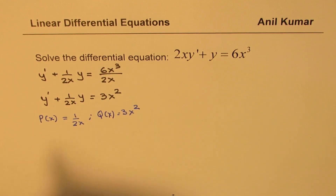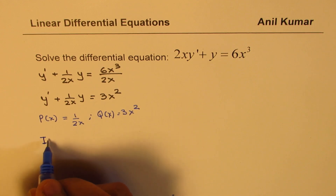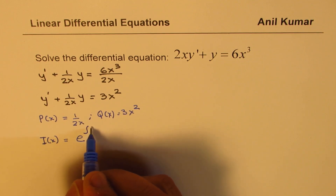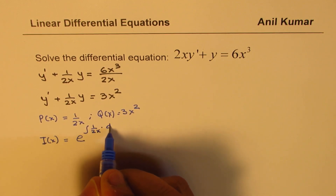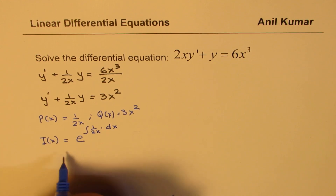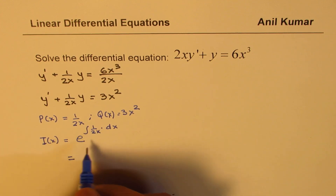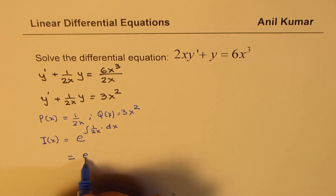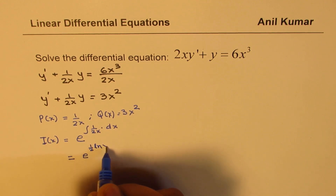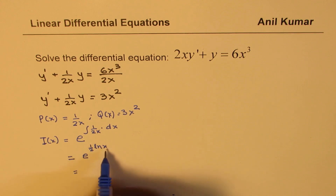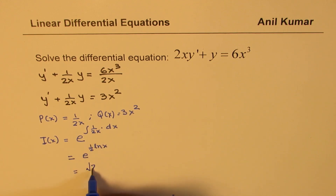We find the integrating factor i(x) equals e to the power of the integral of 1/(2x) dx. That integral is one-half of ln x, so i(x) equals e to the power of one-half ln x, which equals the square root of x.